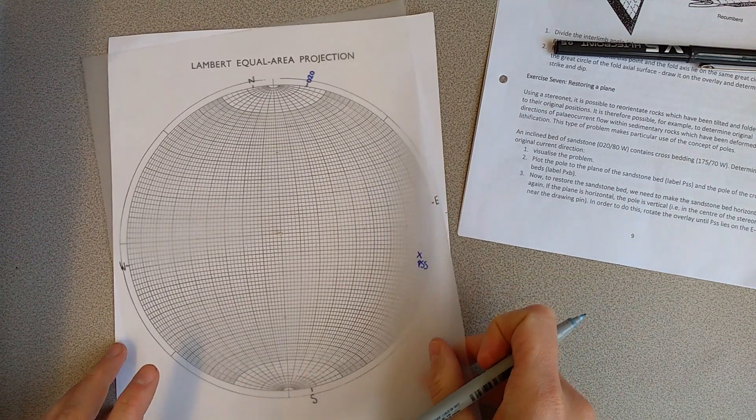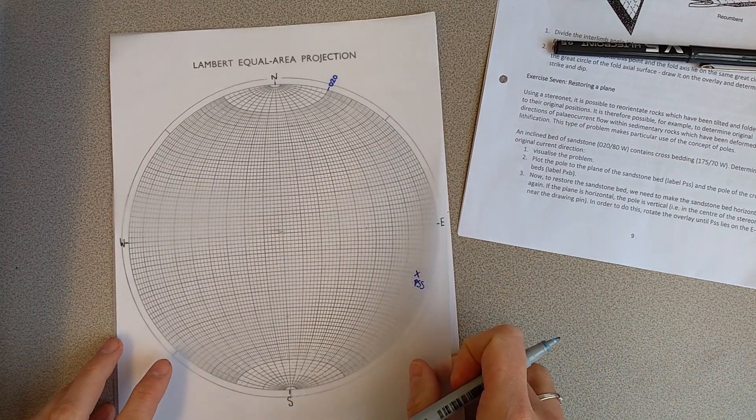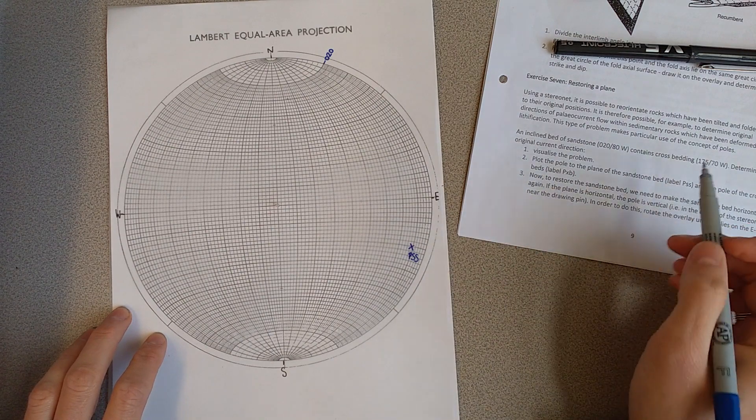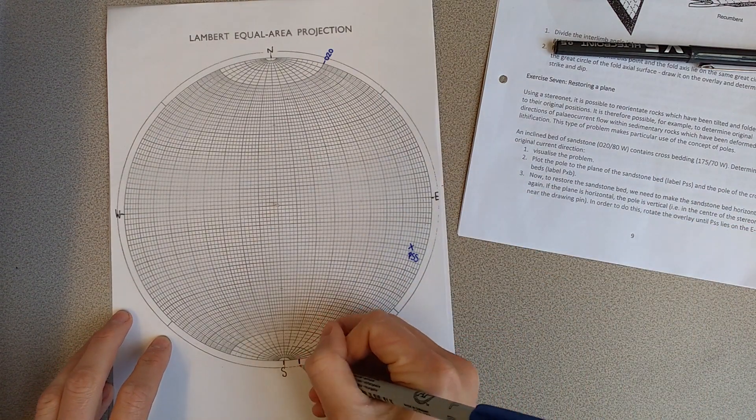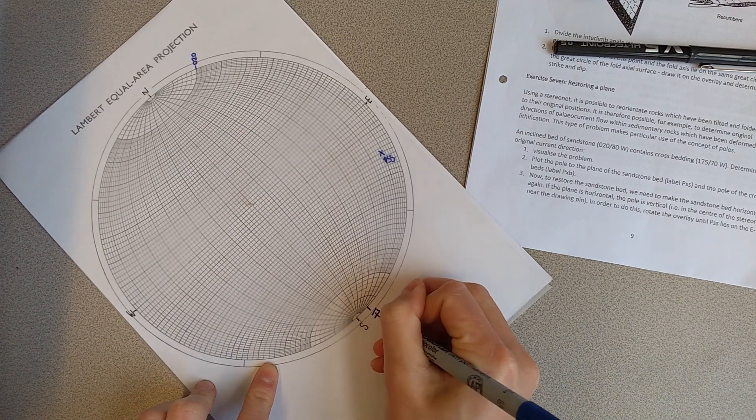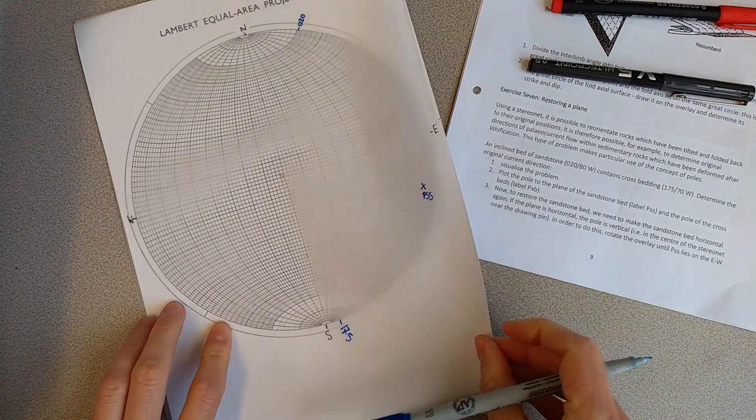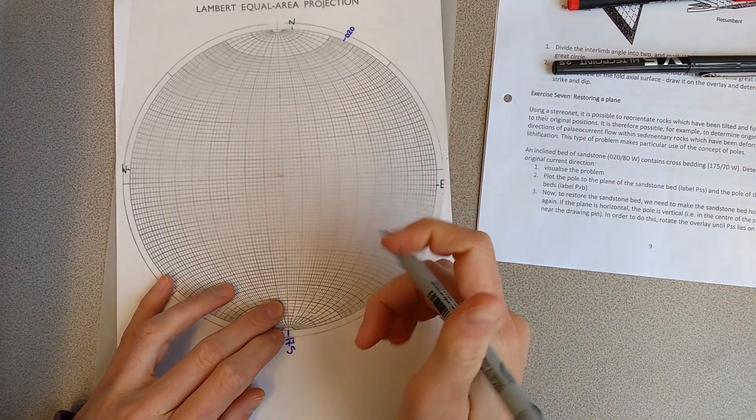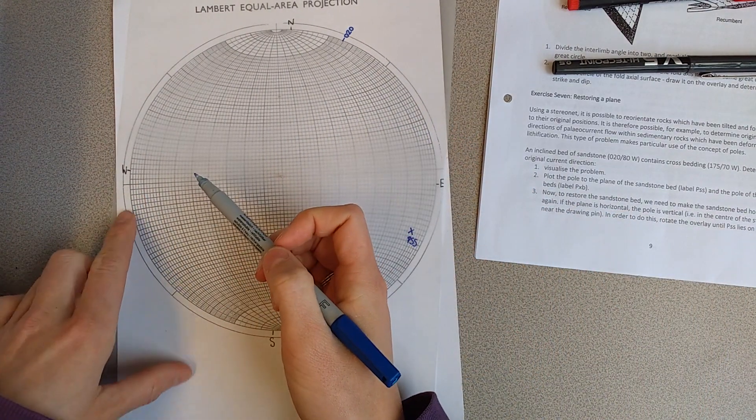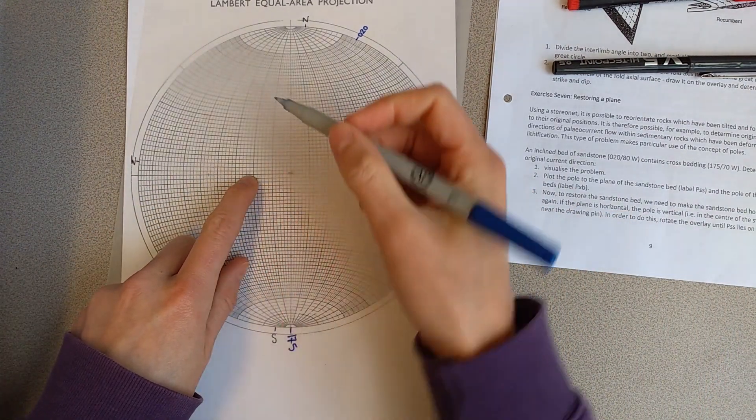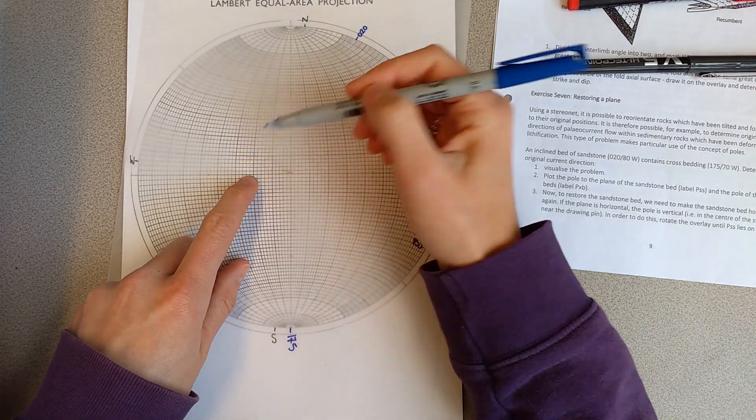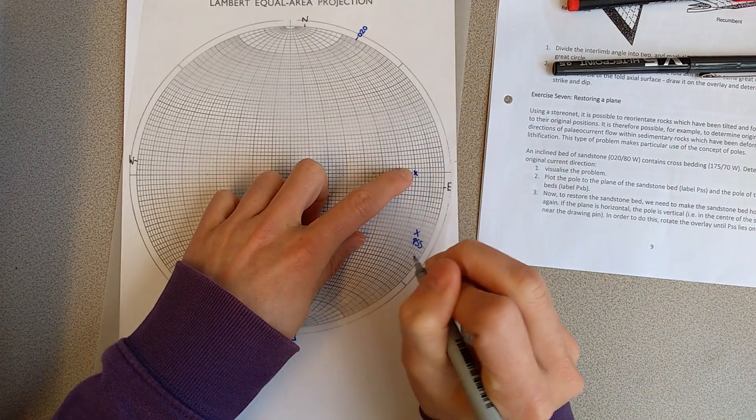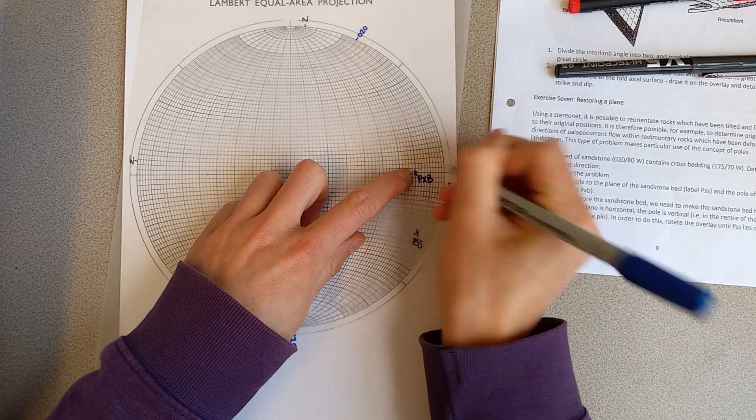Now I'm going to do the same thing for the cross beds. They are 175, so 175 is down here. I'm going to rotate that to south. These are dipping west, dipping 70 west, so that would be this point or this plane and then the pole is going to be plotted over here. I'm going to mark that PXB.